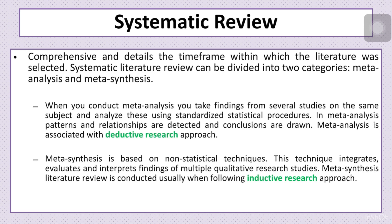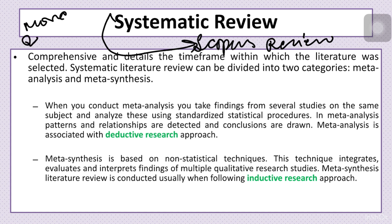The next type is the systematic review. It is similar to the scoping review, with the key difference that the systematic review is more particular and specific — it tries to answer specific research questions.